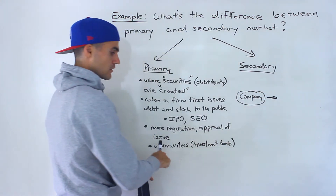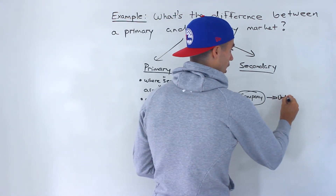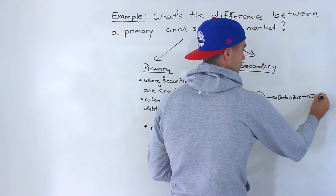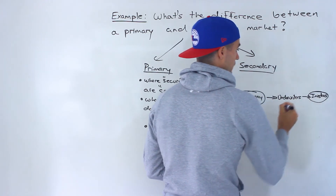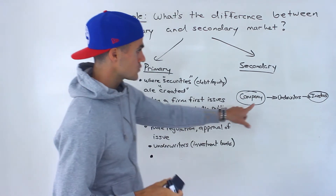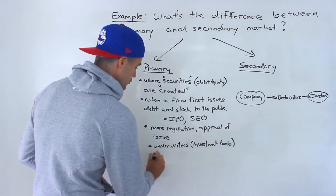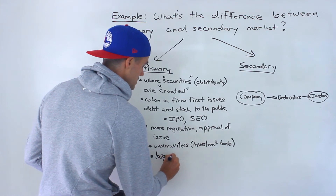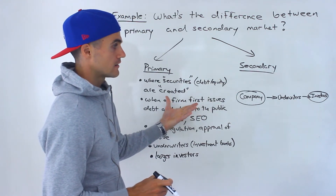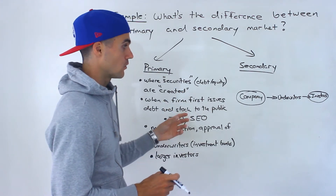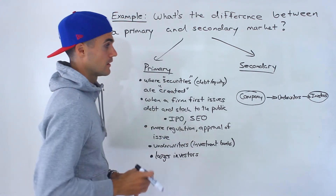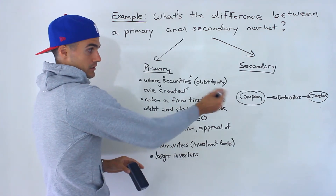These underwriters here, they're like a middleman. So what happens is the underwriters go and sell these securities to the public, or let's call them investors. And usually in a primary market, the ones who are buying these securities first — these investors — are usually larger investors like banks or hedge funds, because the company is basically trying to get rid of all those securities that they created and get all of that funding. So they want to sell in volume to larger investors to get as much of it out there as possible.